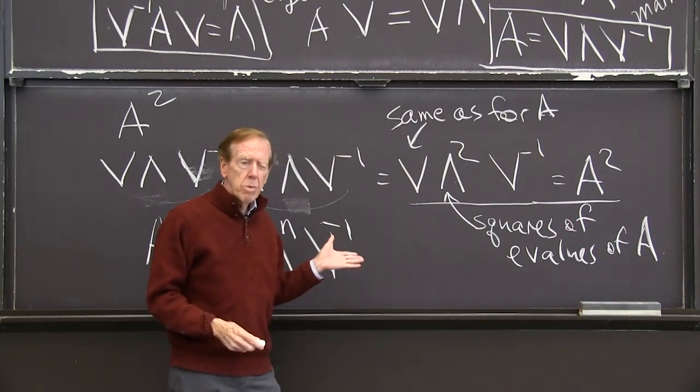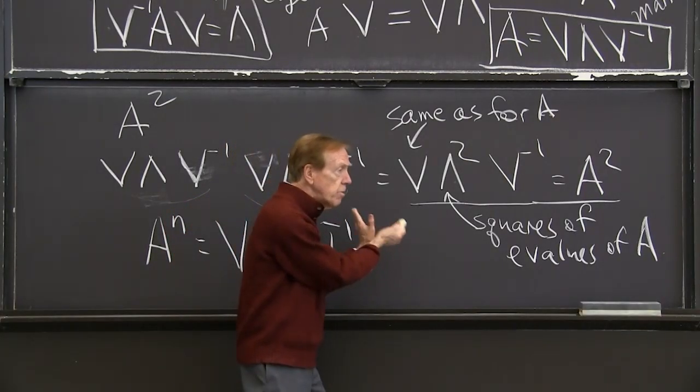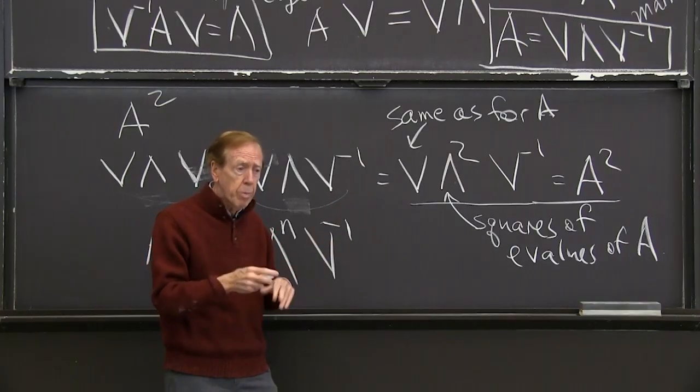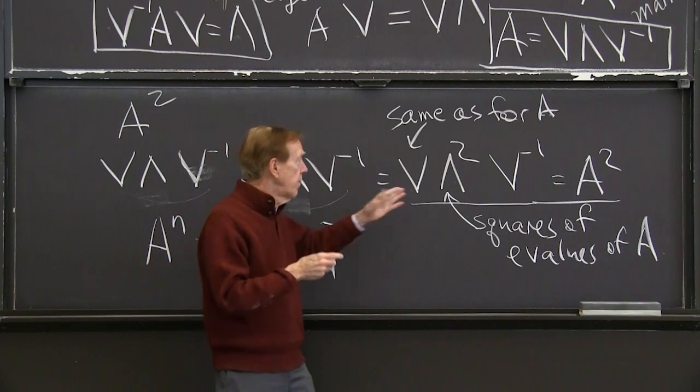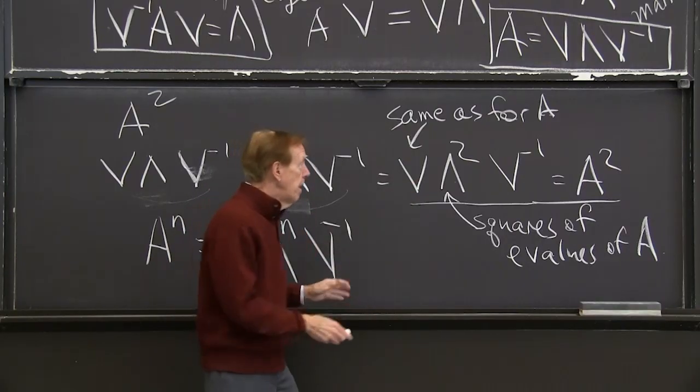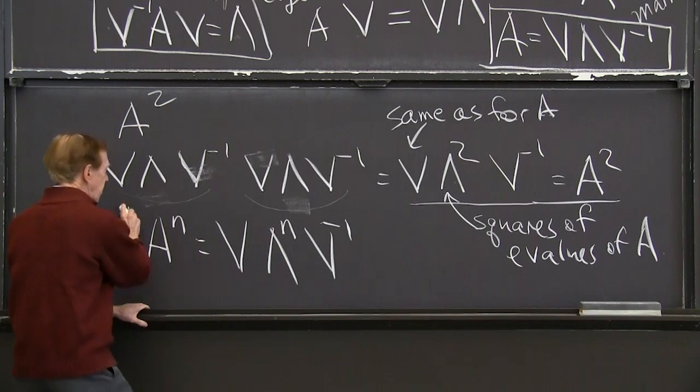And the eigenvalues are squares of the eigenvalues of A. In other words, we can take the nth power and we have a nice notation for it. We've learned already that the nth power has the eigenvalues to the nth power, and the eigenvectors are the same. But now I just see it here, and there it is for the nth power.